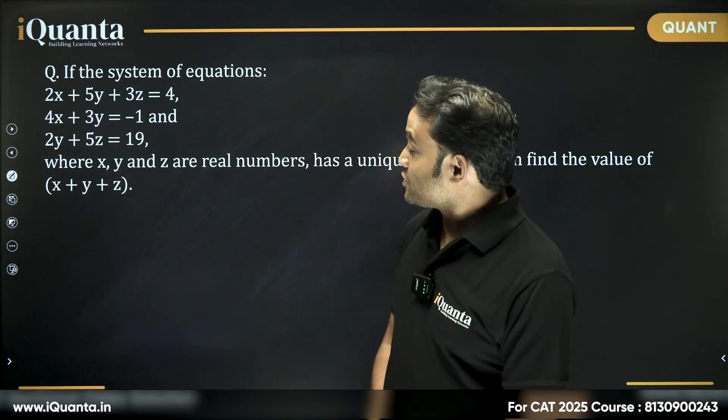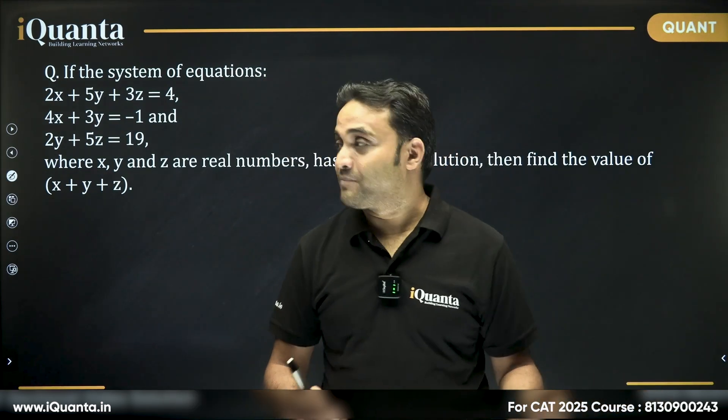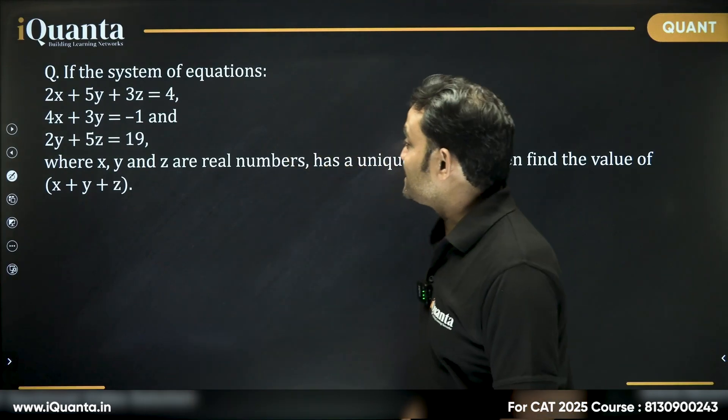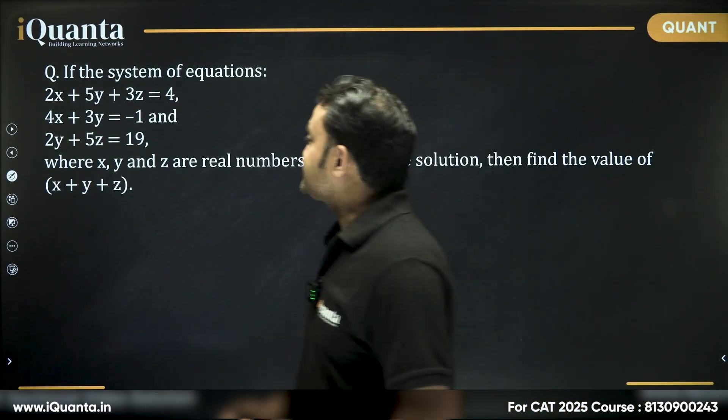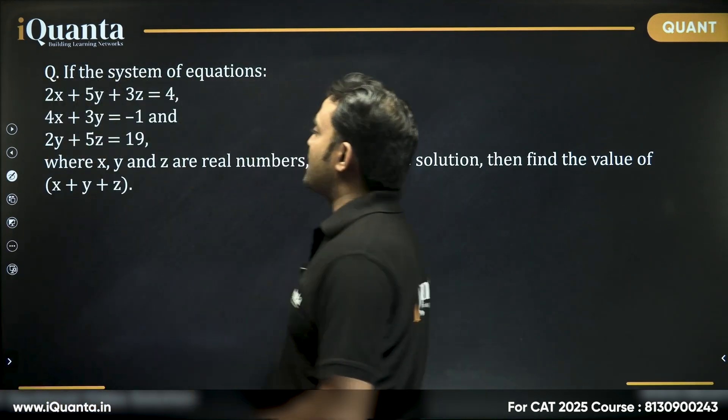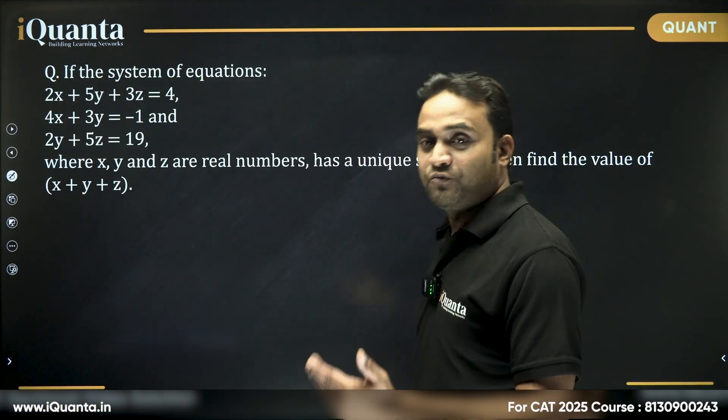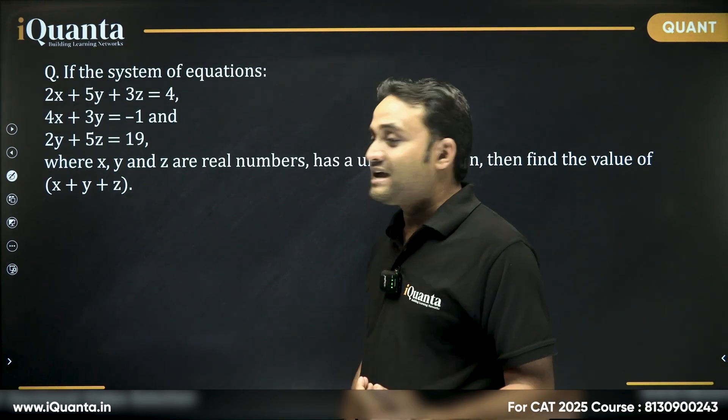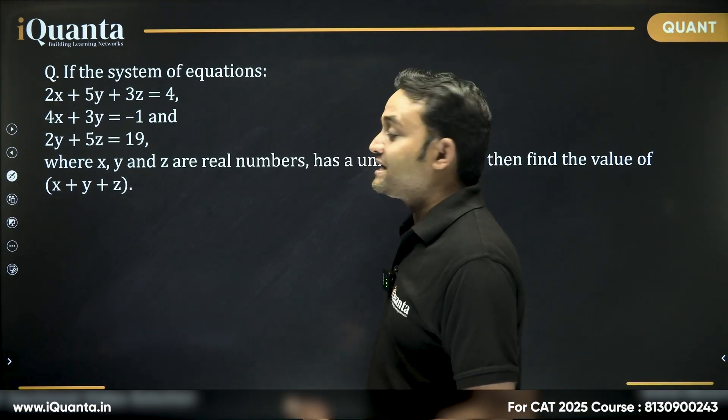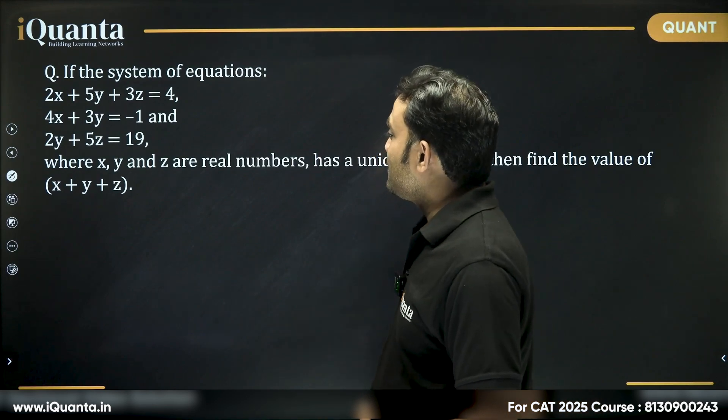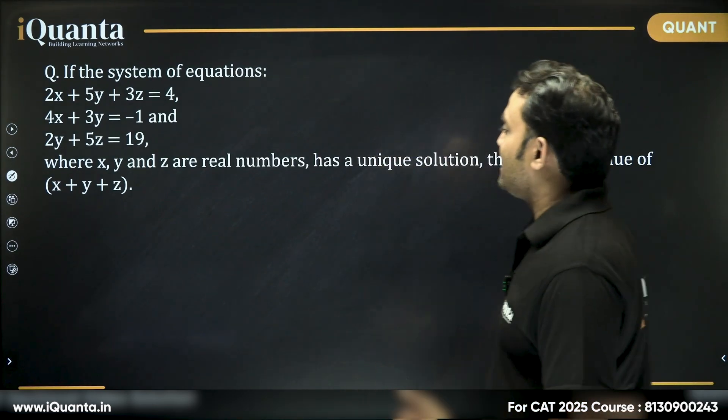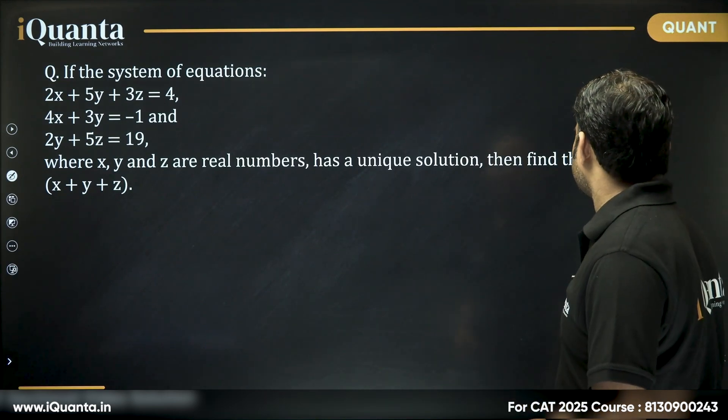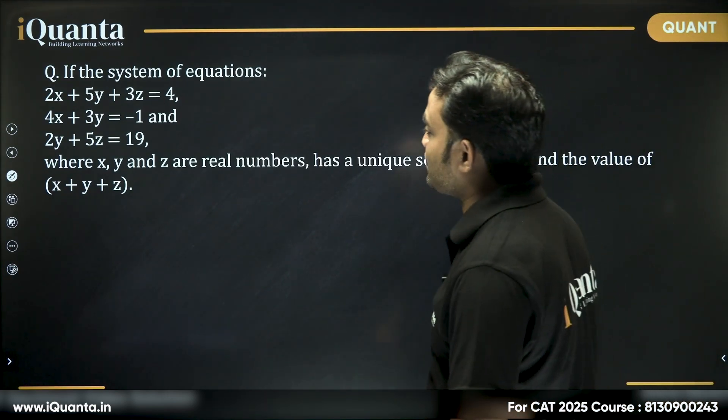Now, as it looks, this question is from algebra with three equations, three variables, to be precise linear equations. It says if the system of equations 2x + 5y + 3z = 4, 4x + 3y = -1, and 2y + 5z = 19, where x, y and z are real numbers, has a unique solution, then find the value of (x + y + z).